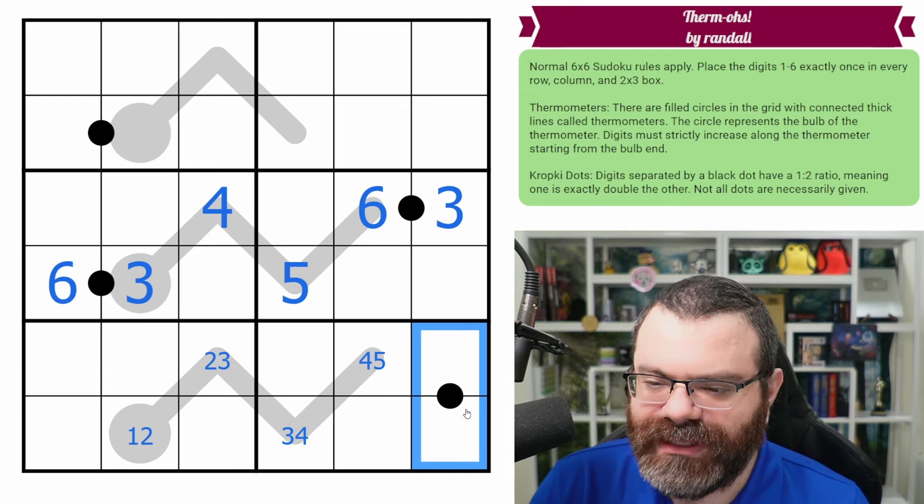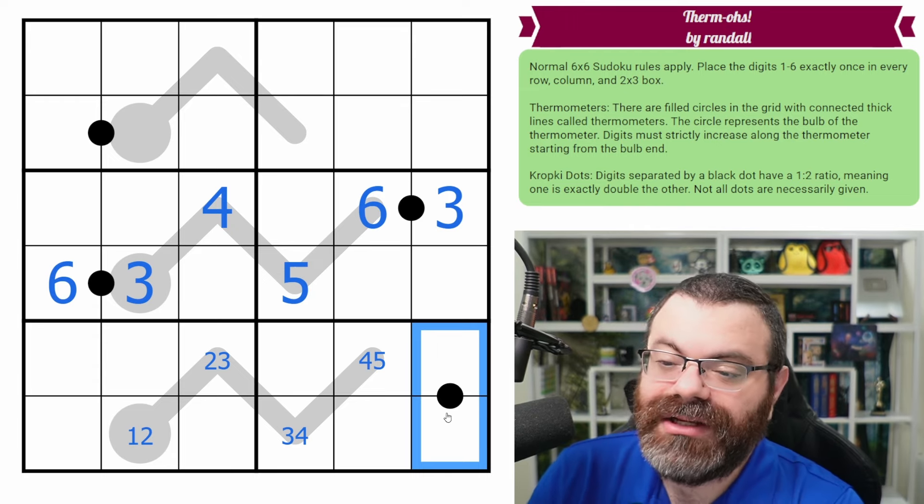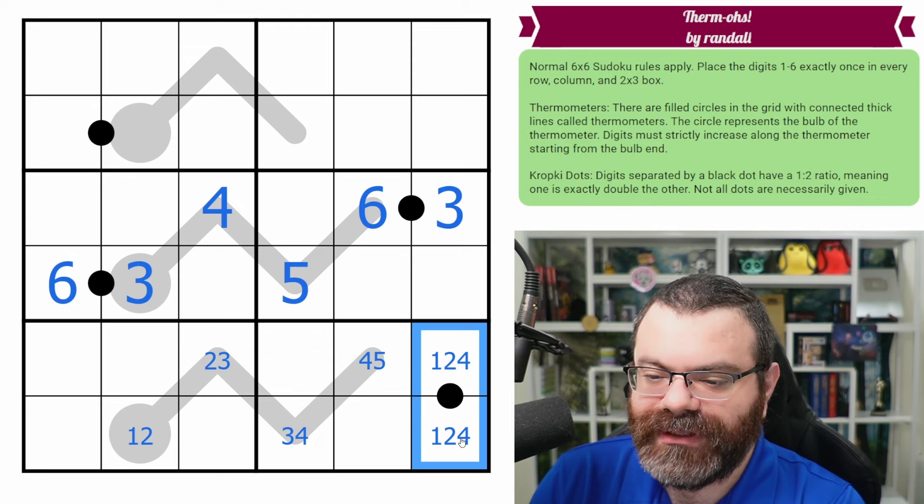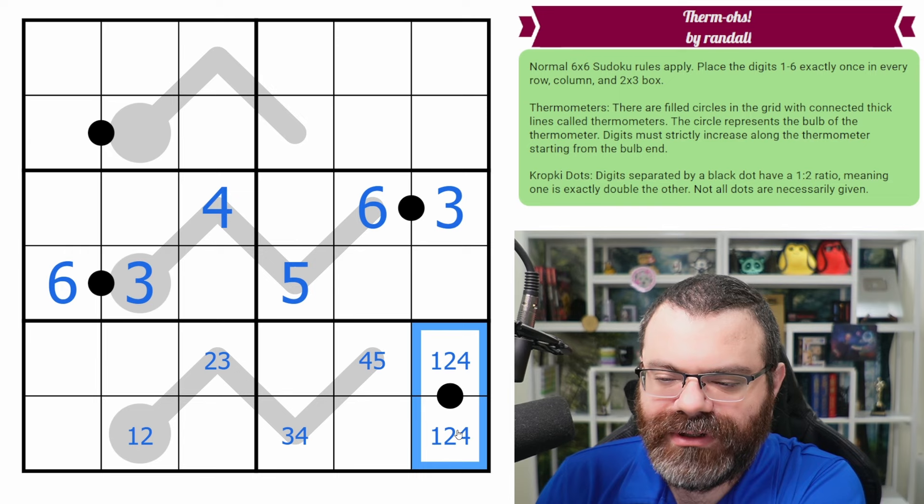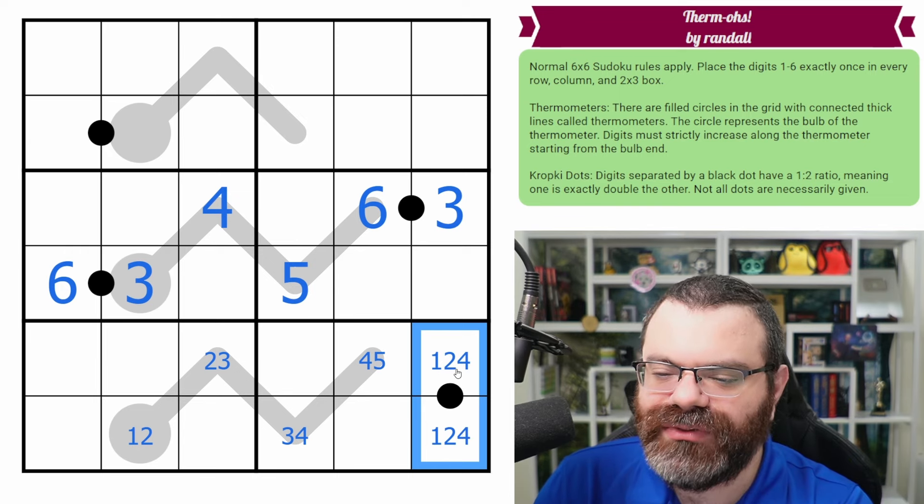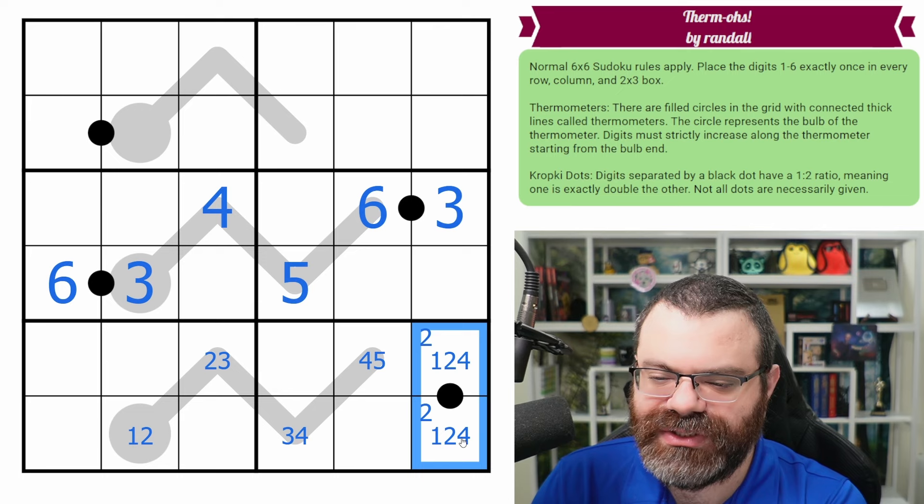This black dot though, it can't have a three on it, which means it also can't have a six on it. So our options are one, two, four, because you can never put a five on a black dot. So it doesn't have three, five, or six. So it's one, two, four. And so that means it's either one, two, or two, four, which always uses up the two. So there is a two in one of these two cells.